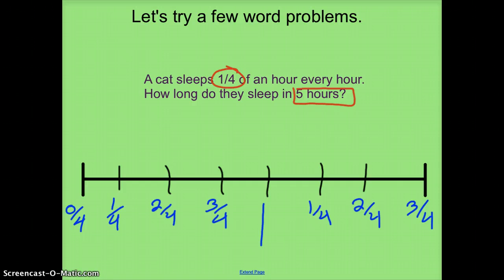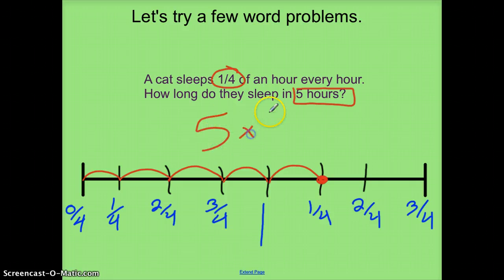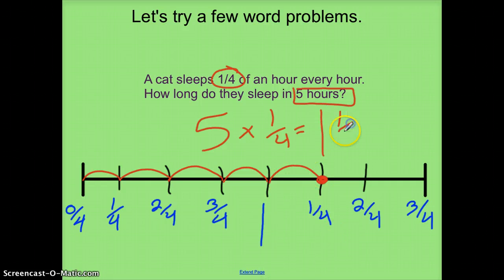A cat sleeps a fourth of an hour the first hour, the second hour, the third hour, the fourth hour, and the fifth hour. Since it asks for five hours, I'll put my point here and write the number sentence: five times one-fourth equals one-and-one-fourth hours.